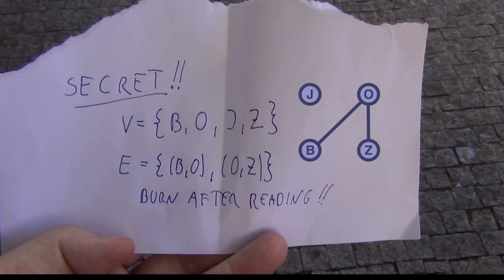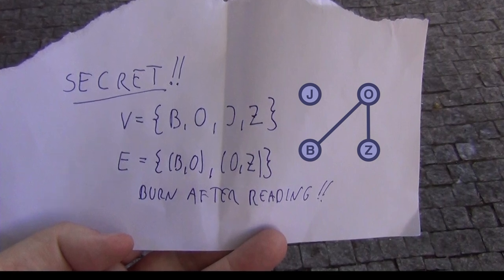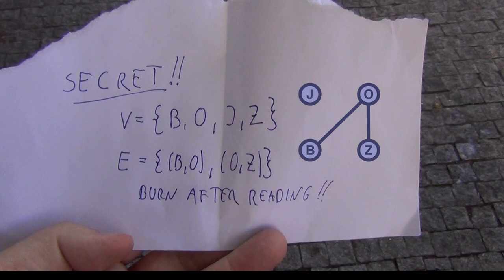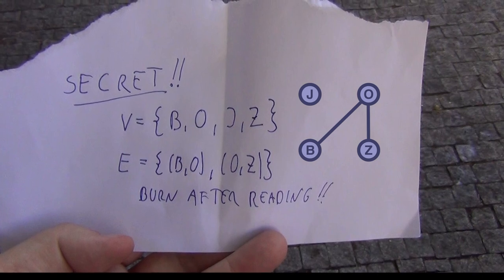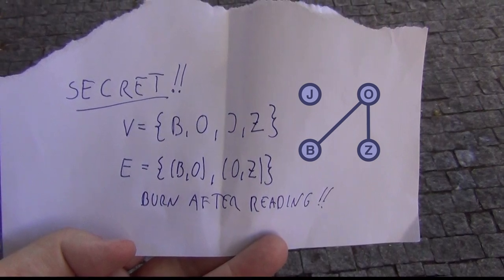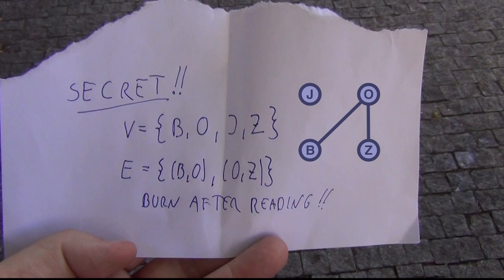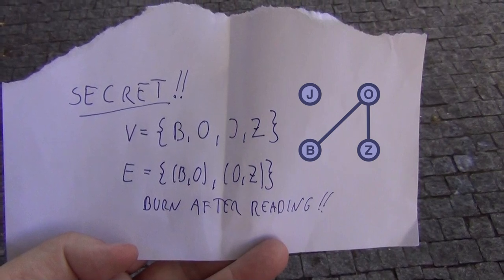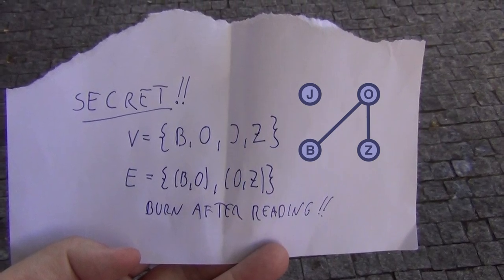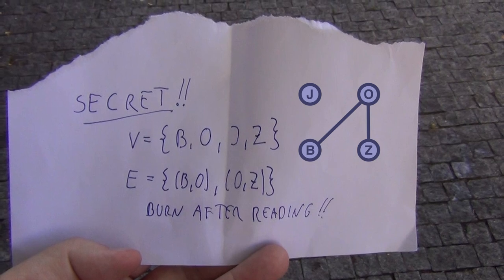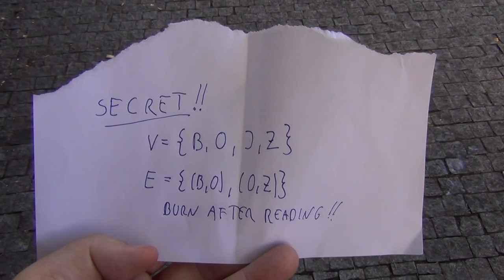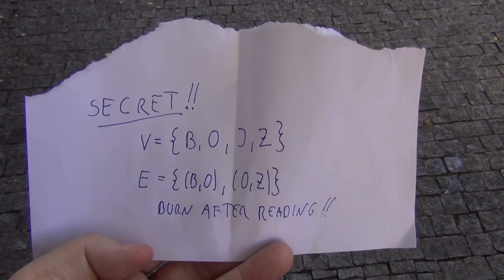But wait a minute — is this actually one network or two? Because Jihlava is kind of isolated. Convention says this is one network, but it has two components. One component is just Jihlava, while the other component contains all the rest. So the components are the connected bits, while the network may be disconnected.